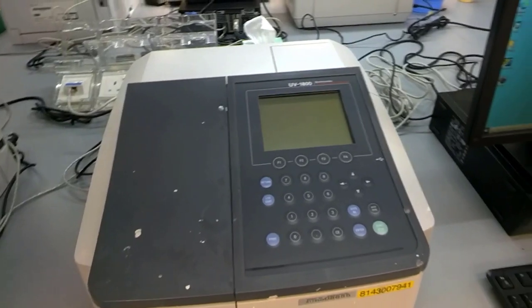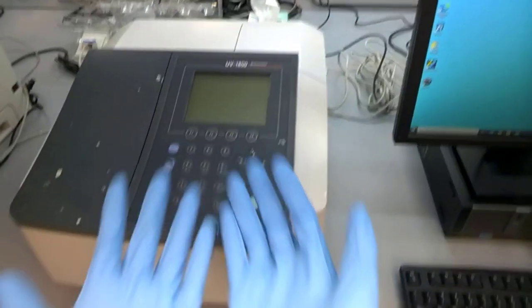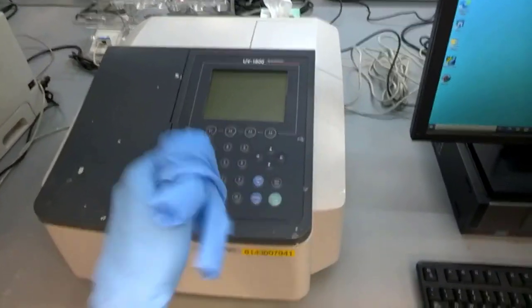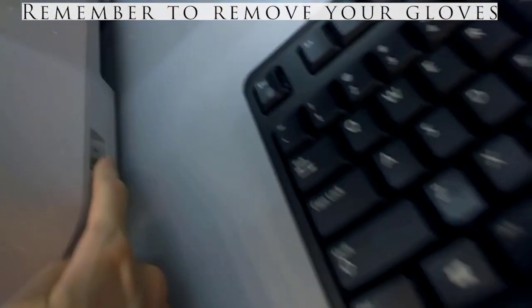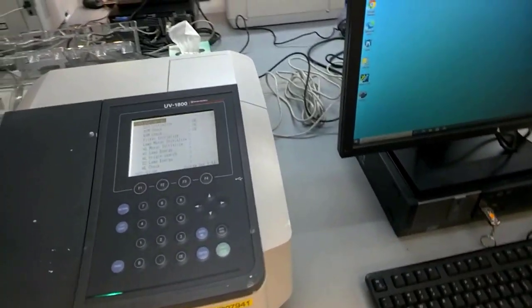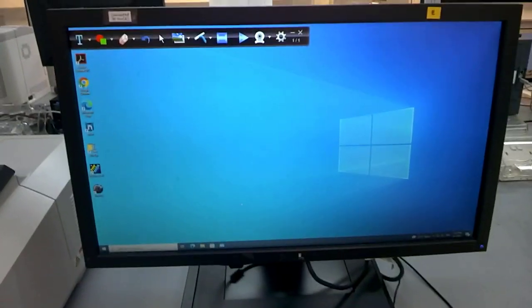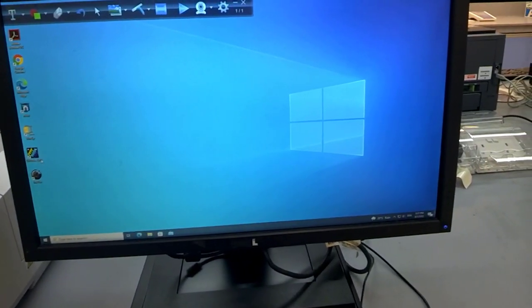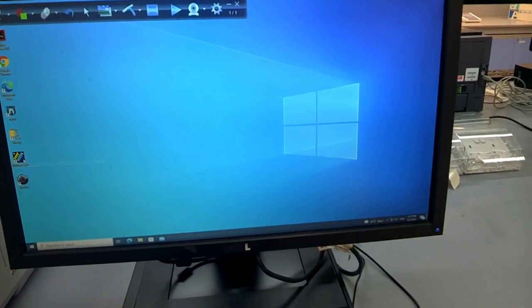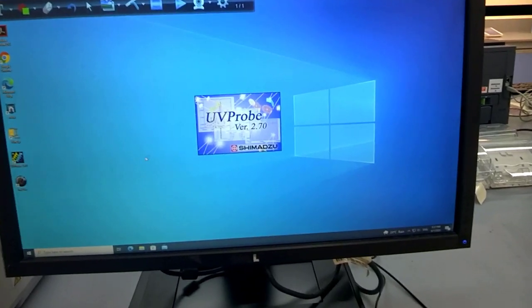First thing is you need to look for the switch. Now, before you touch any of the instrument here, you need to make sure that your glove is off, so that no chemicals are on the surface. The on button is right here. Hear the sound? Then the light comes up, and you wait for a while for it to load. At the same time, you will have turned on the PC. Let's open up the program, Benjamin. It's UV Probe 2.70, right? Yep.